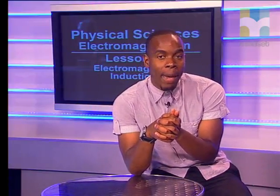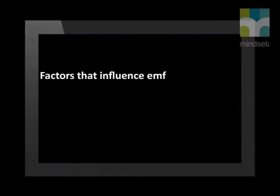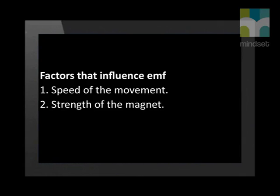We know now that a current will be induced when a magnet is moved relative to a coil of conductors. What determines the strength of the induced EMF? There are three factors that influence the strength of the induced EMF: the speed of the movement, the strength of the magnet, and the number of coils on the solenoid.